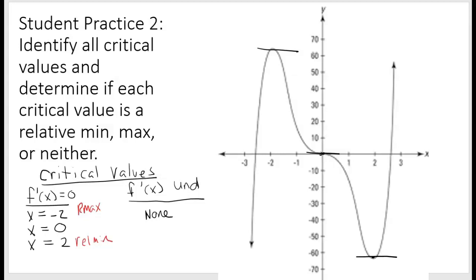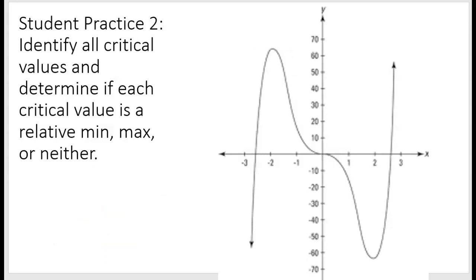To be more formal: negative 2 is not the relative max — it's where the relative max happens. The relative max is the y value, f of negative 2. Similarly, the relative min is not at x equals 2 — the relative min is the y value f of 2. That'll do it for our lesson today — until next time, have a good one.